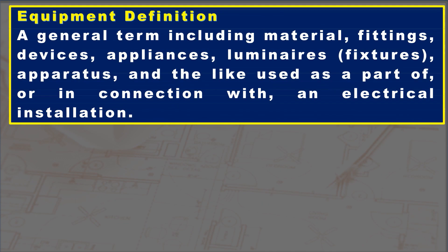First, let's define equipment in the electrical code. Equipment is a general term including material, fittings, devices, appliances, luminaires, fixtures, apparatus, and the like, used as part of or in connection with an electrical installation. Therefore, this definition clarifies that electrical accessories such as lugs, boxes, conduits, bushing, light fittings, receptacle outlets, and the like are considered equipment.